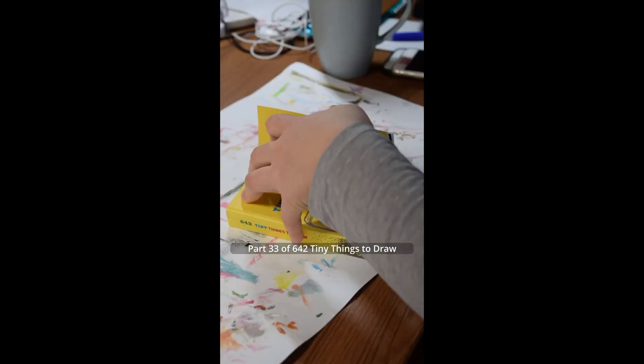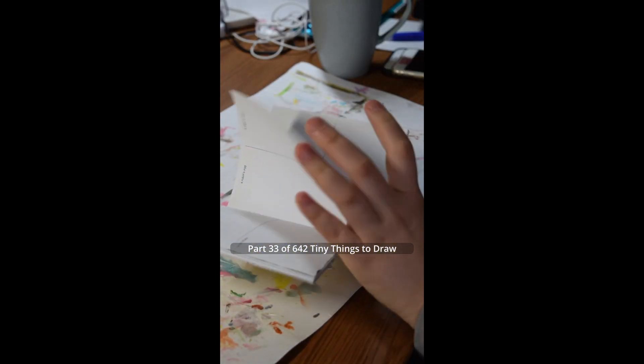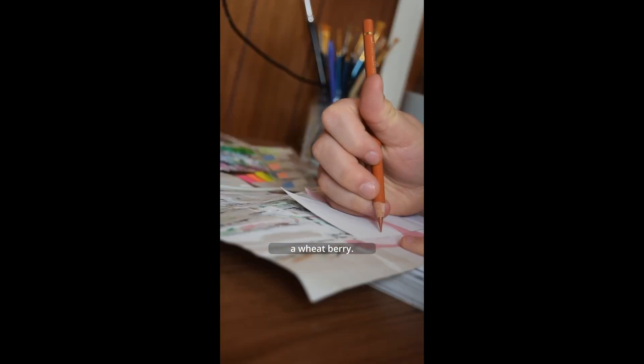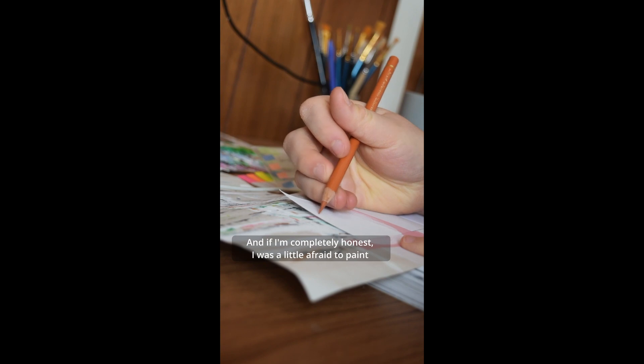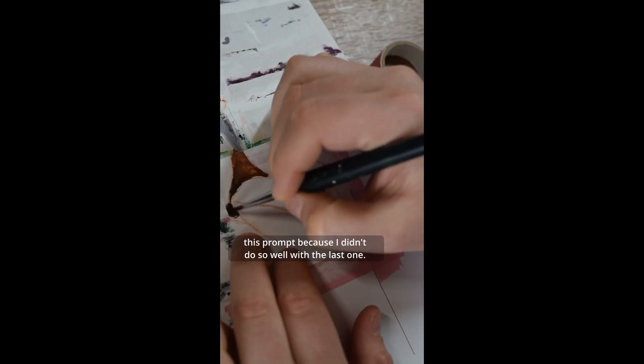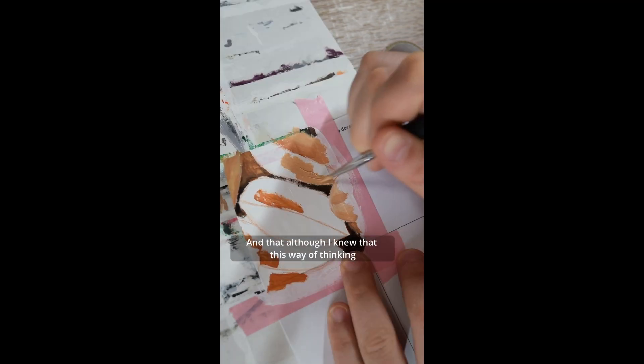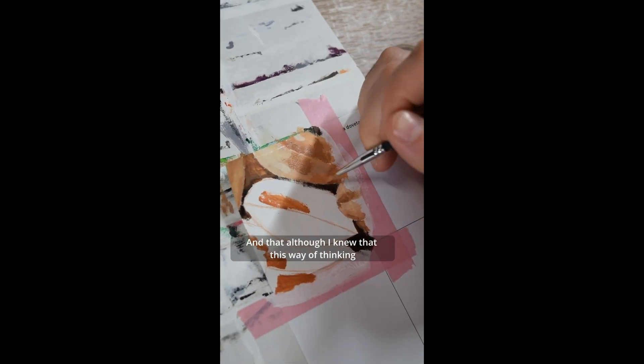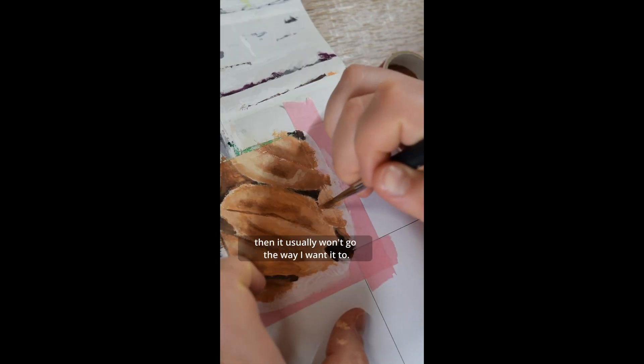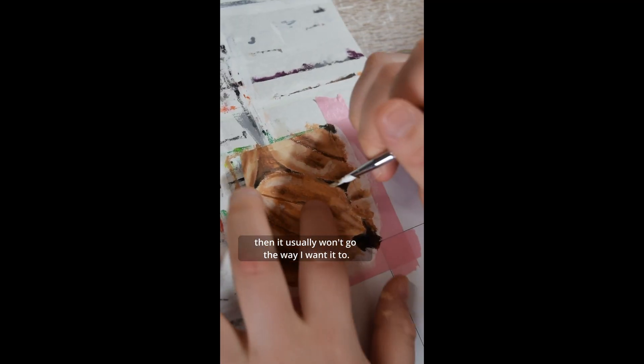Part 33 of 642 tiny things to draw. Today I will paint a wheat berry. And if I'm completely honest, I was a little afraid to paint this prompt because I didn't do so well with the last one. And although I knew that this way of thinking is actually not so good. If I'm afraid to paint, then it usually won't go the way I want it to.